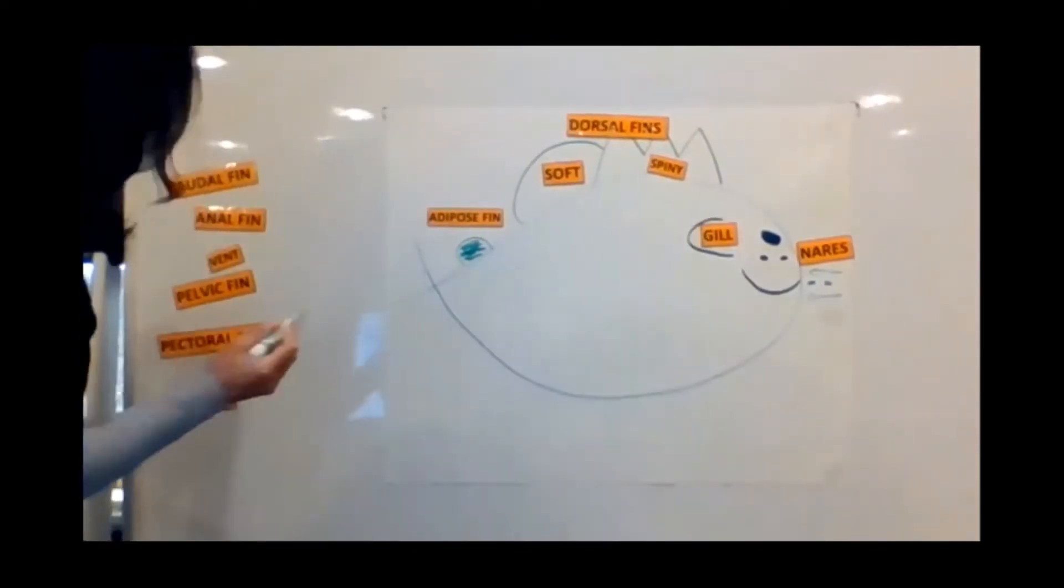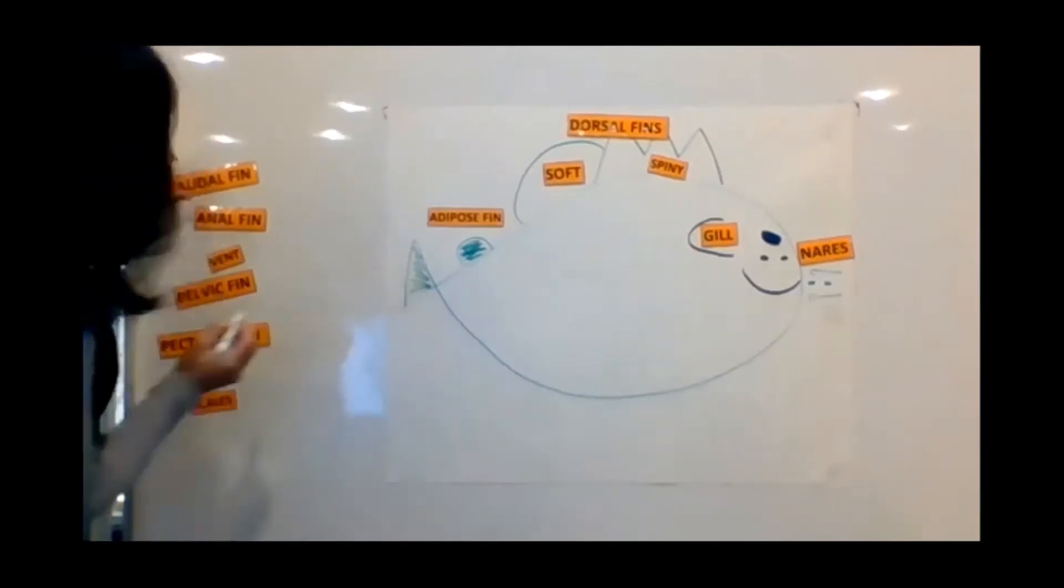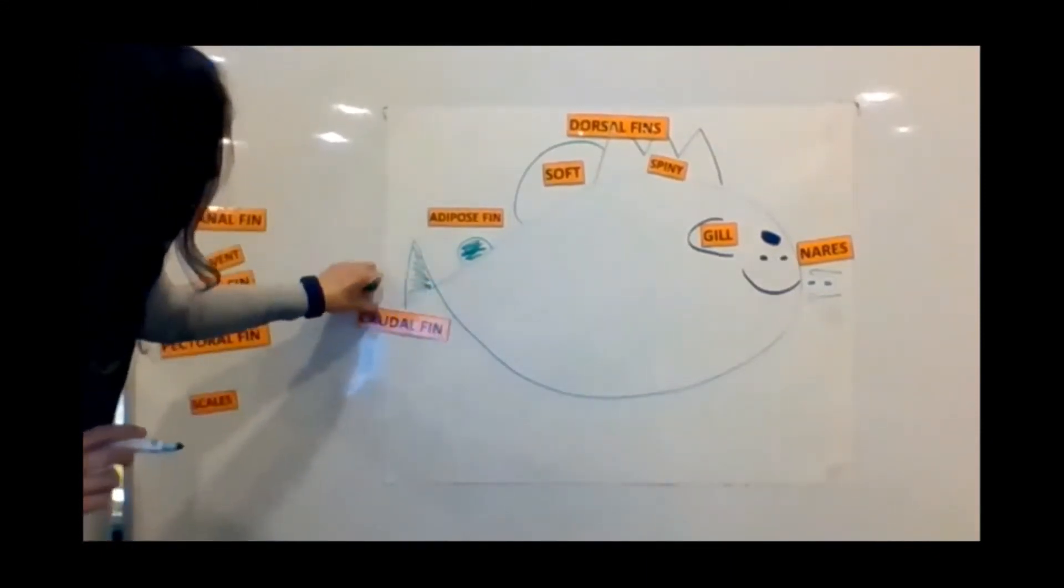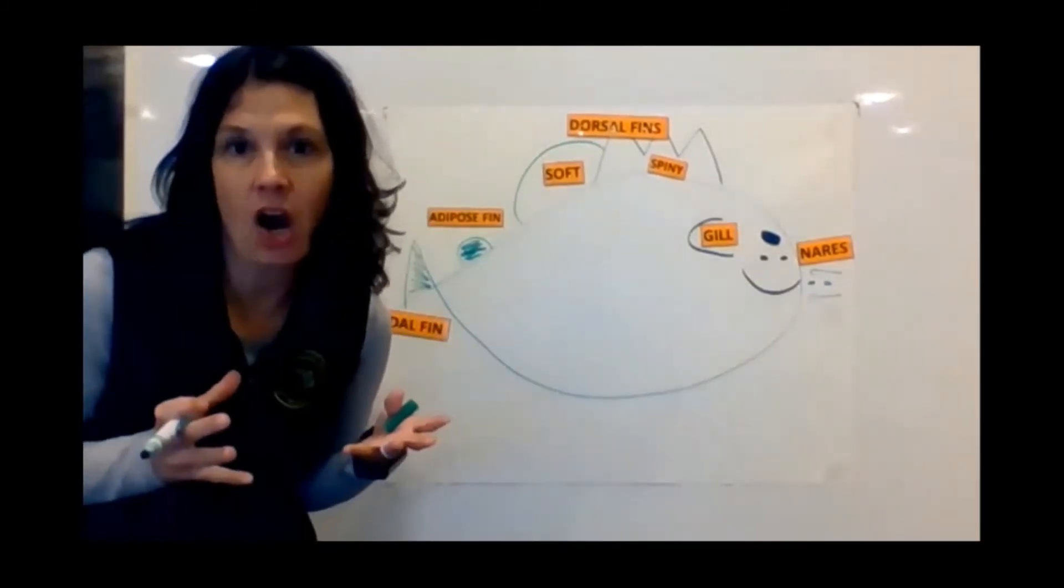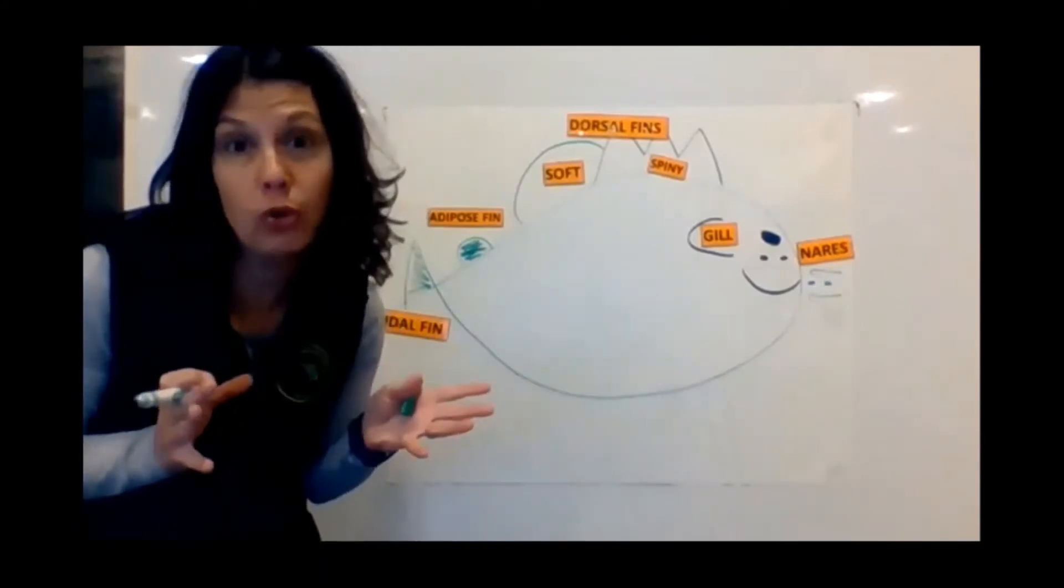I'm going to close this tail a little bit so we can see it better. Our fancy name for a fish's tail is caudal fin. Think of that like the motor on the boat, or the engine on a car. It's the power source. It's what propels or moves the fish through the water.